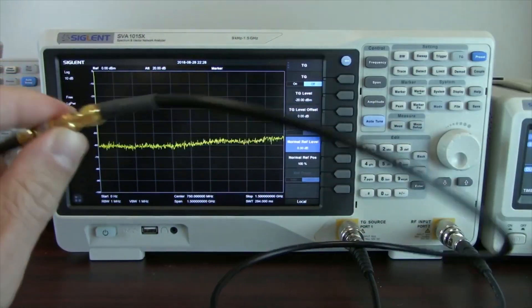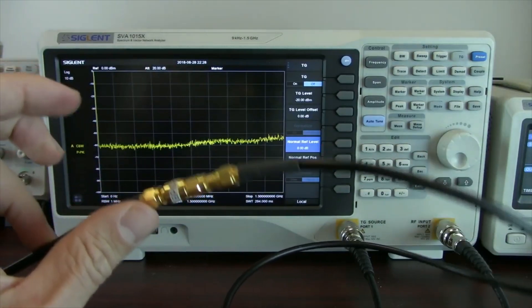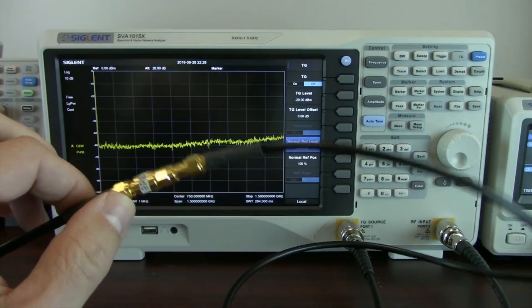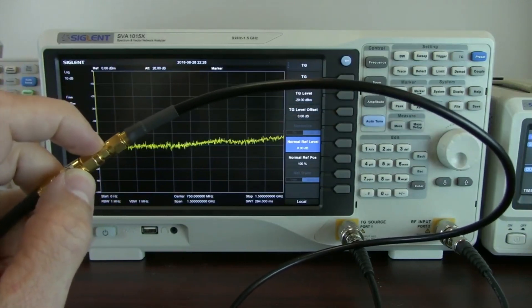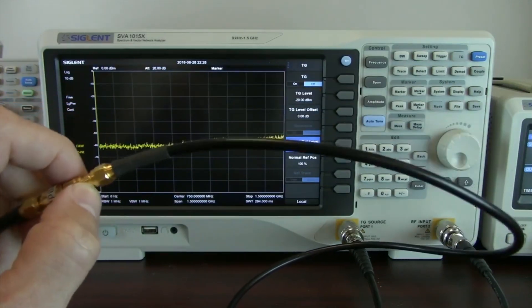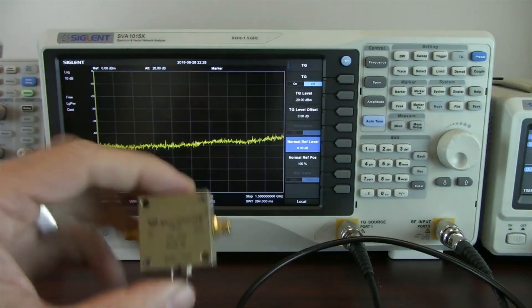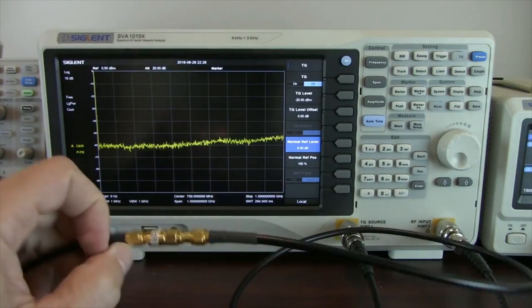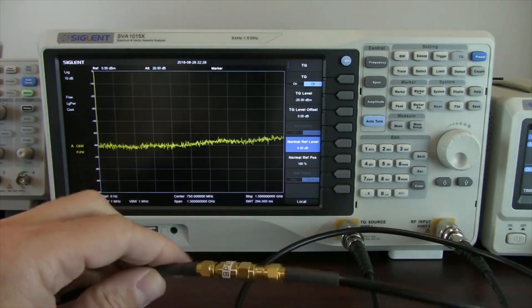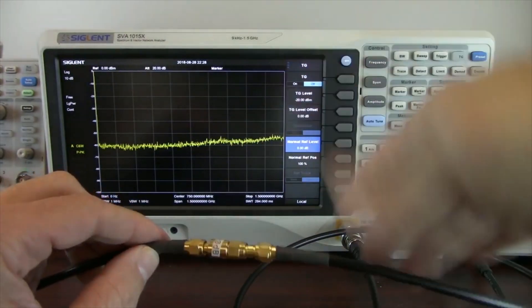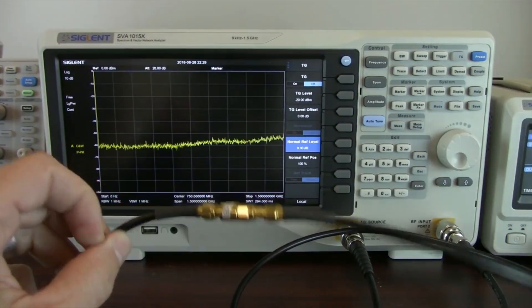All of these different connections are going to add some sort of error to our measurement. What we actually want to do is get rid of all of those, and then we'll replace this through adapter, which hopefully has the least amount of influence on the measurement, and we're going to replace that with our device under test, in this case our amplifier. This is what is called a normalization step. We're basically calibrating or removing all of the effects of the cabling from this particular setup.